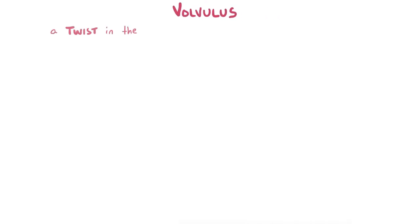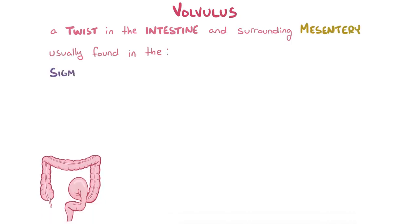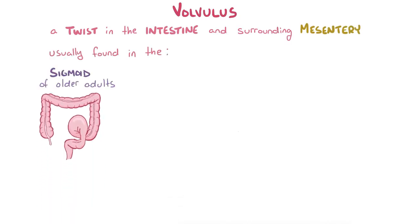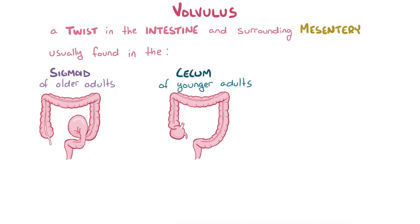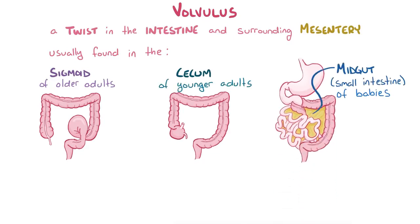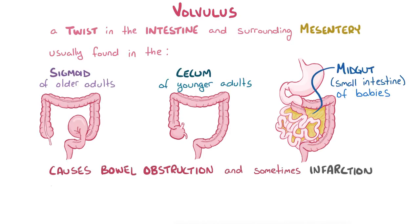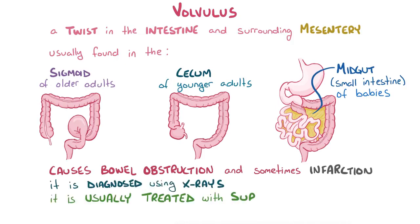As a quick recap: a volvulus is a twist in the intestine and surrounding mesentery, and it's most commonly found in the sigmoid colon of middle-aged and older adults, the cecum of young adults, and the midgut or small intestine of babies. Volvulus results in bowel obstruction and can sometimes cause infarction, or death, of the bowel tissues. It is diagnosed using x-rays and is usually treated with surgery to remove part of the bowel and attach the bowel up against the abdominal wall.